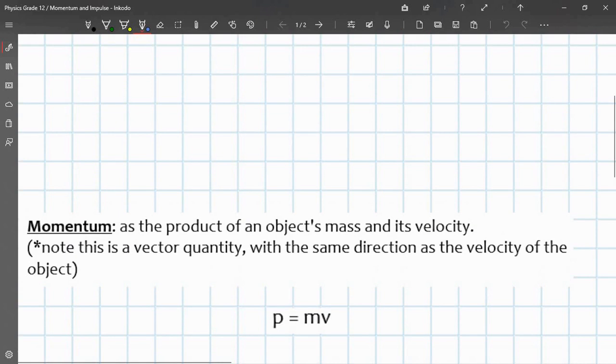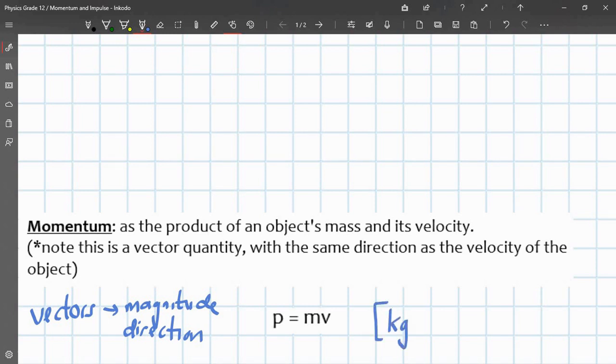So, we should also remember that vectors have two things: they have a magnitude and direction. Also, the units for momentum is equal to kilograms meters per second.